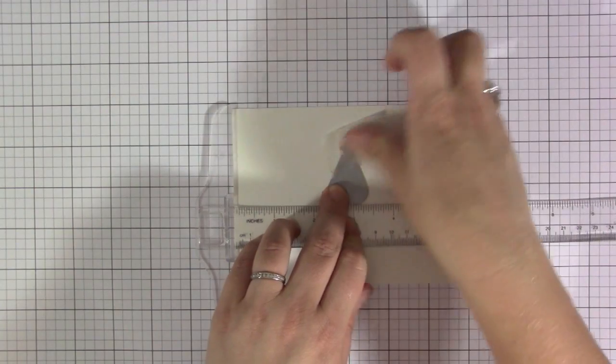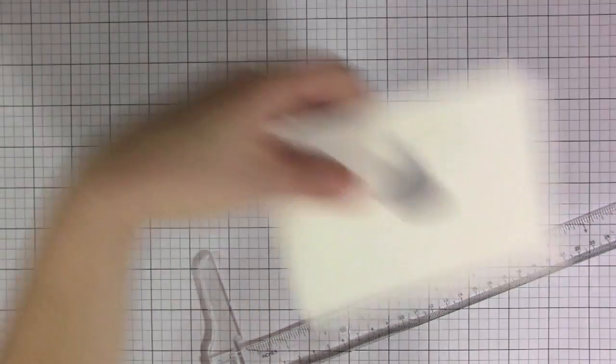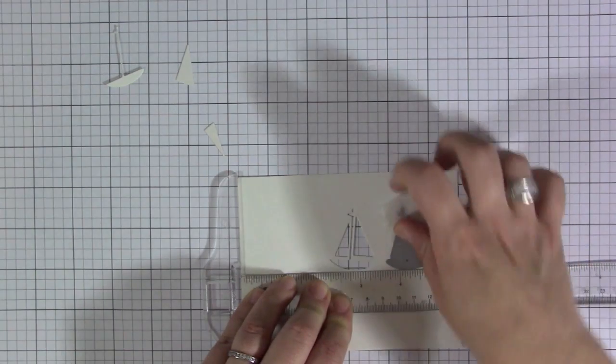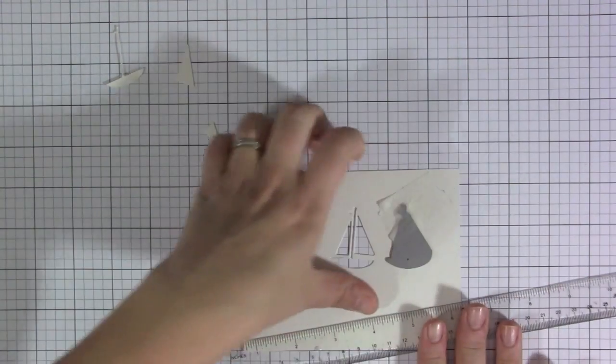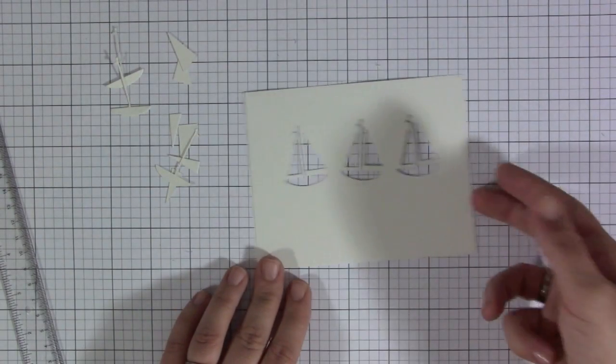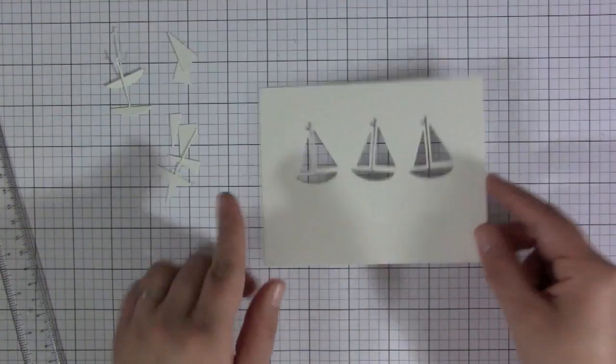For this card here, I'm going to first start out with the exclusive die that comes in the kit. It's a little sailboat, and I just think it's adorable. I knew that I wanted to use it a few times on this card design, so I'm just using my T-square ruler to line up the boats.